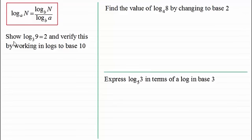Now with this first one we've got to show that the log of nine in base three equals two and then verify this by working in logs to base ten. So if we take the log of nine in base three then the answer is going to be two. And the reason is we should be familiar with this. That is the base which is three raised to the power two gives us nine. So it's that two here the power that is our two here.